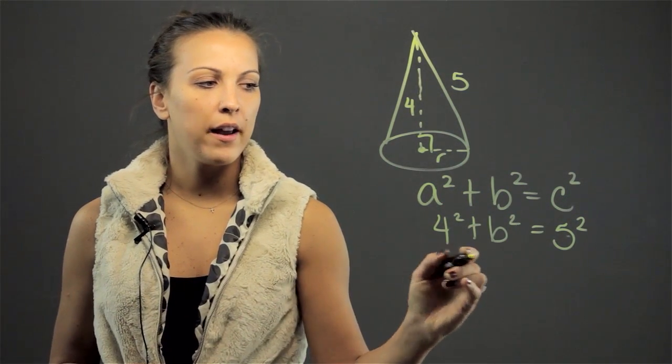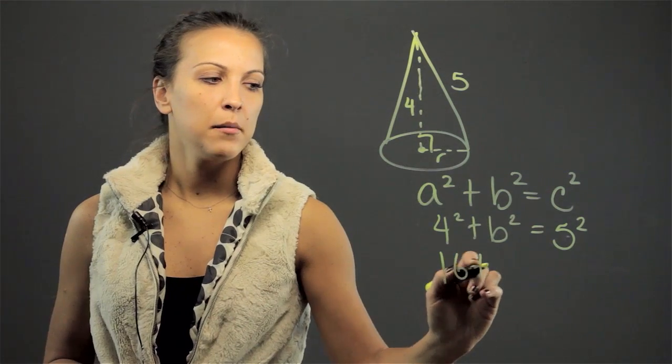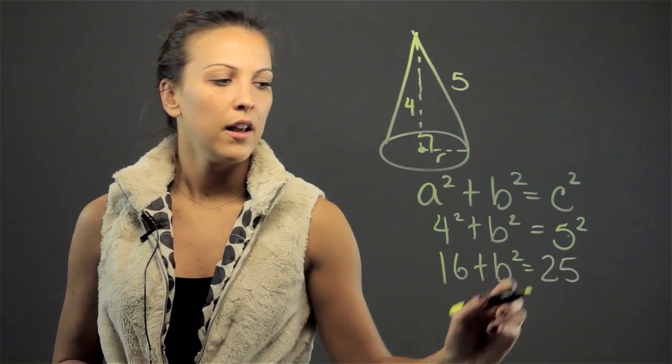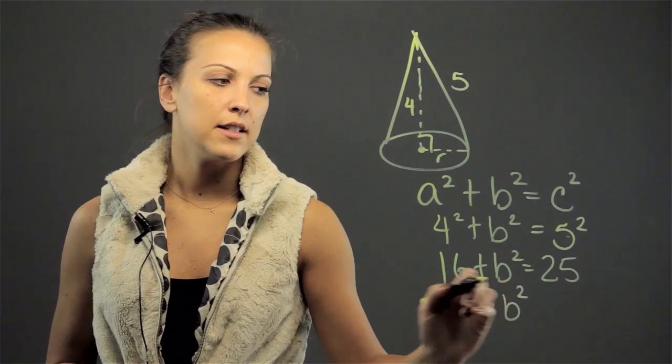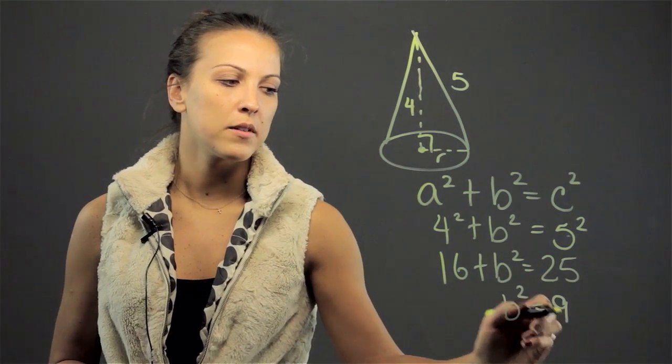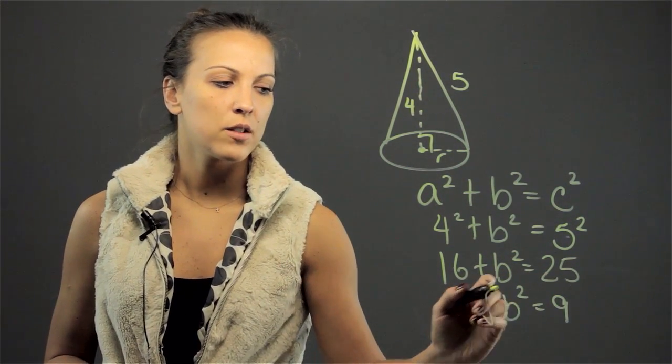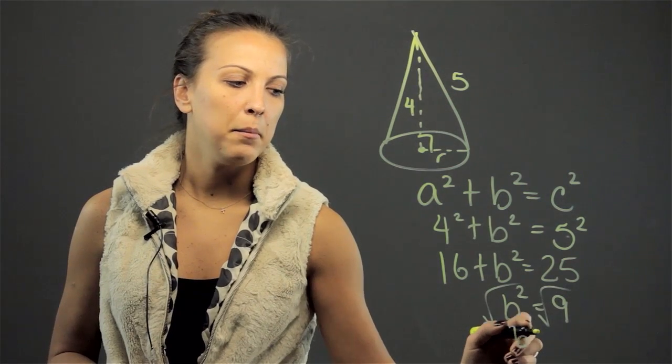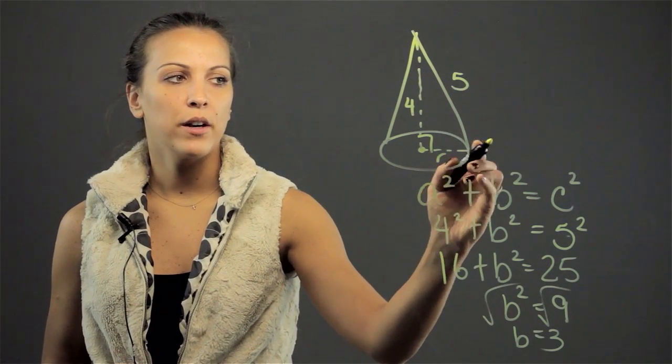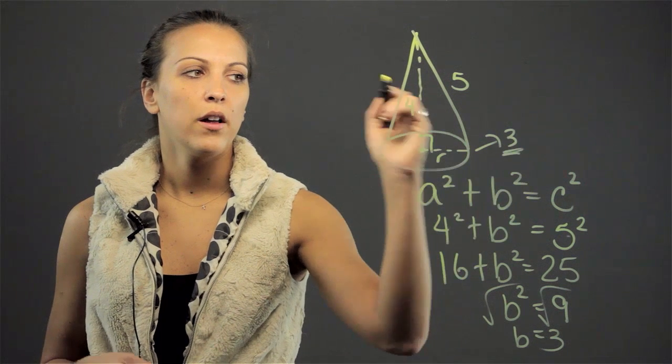And now when I simplify, I'm going to get 16 plus b squared equals 25. And when I subtract 16 from both sides, I get b squared equals 9. And finally, when I take the square root of both sides, I get b equals 3. So that means that this radius right here is equivalent to 3.